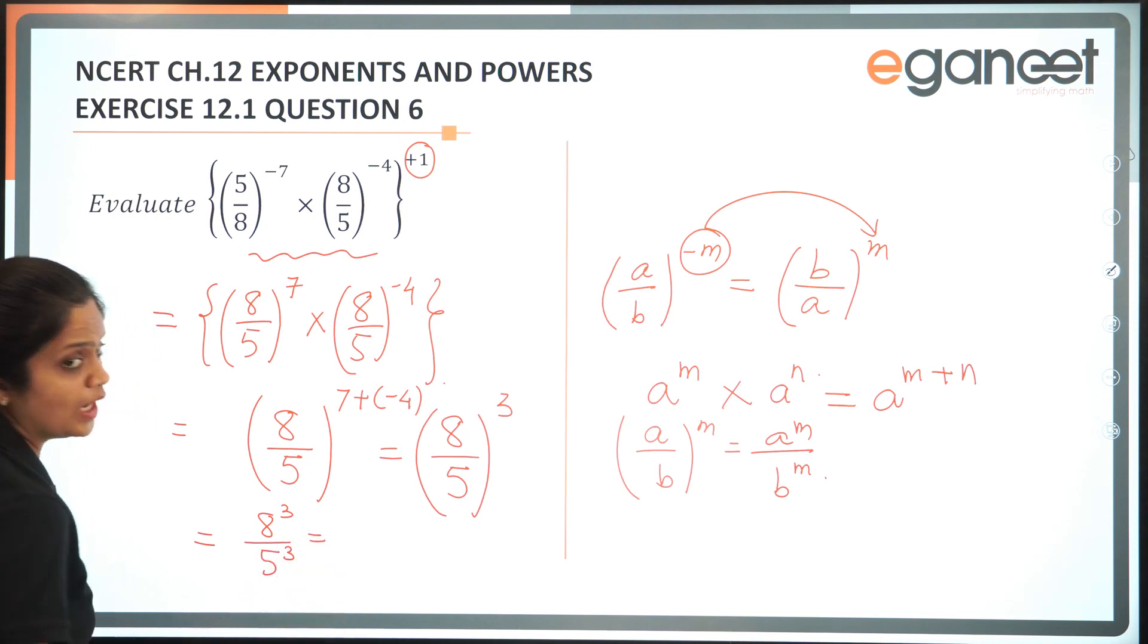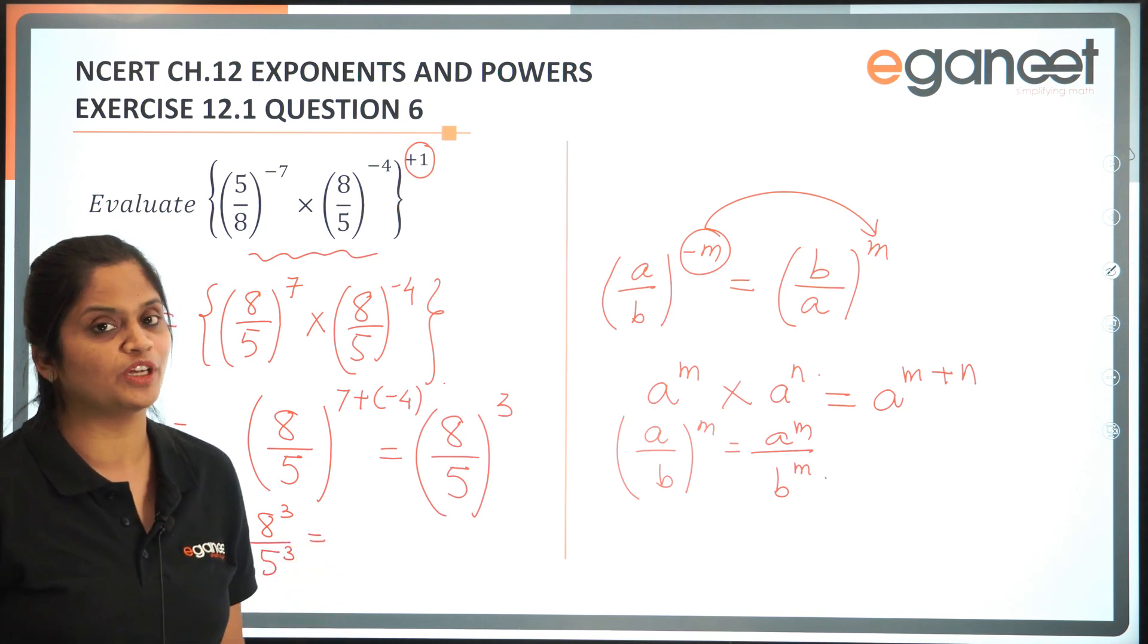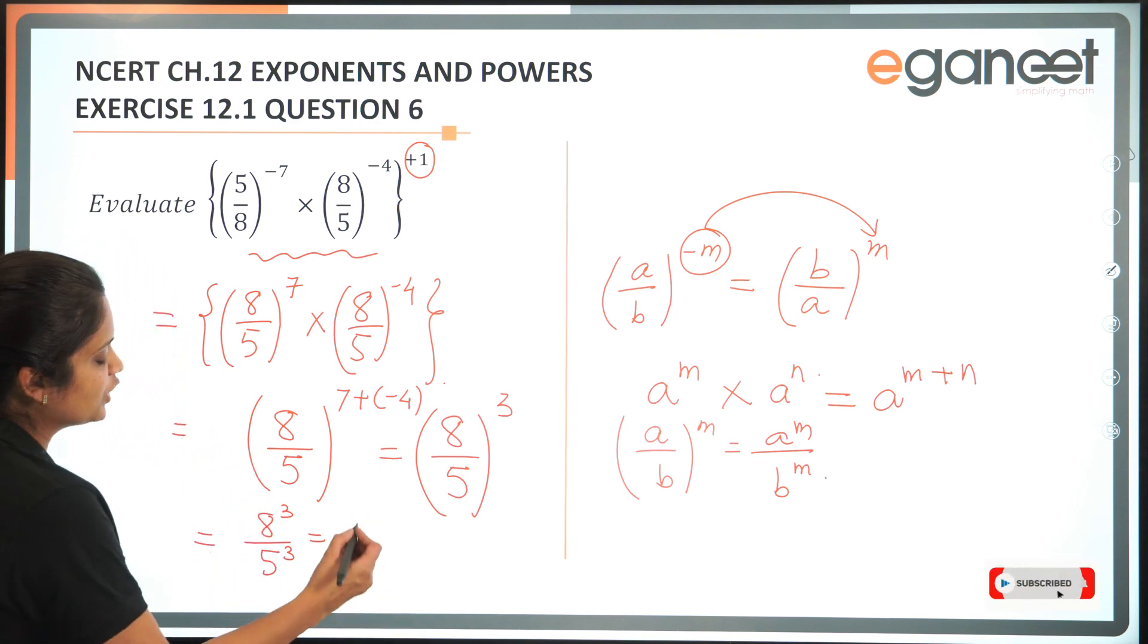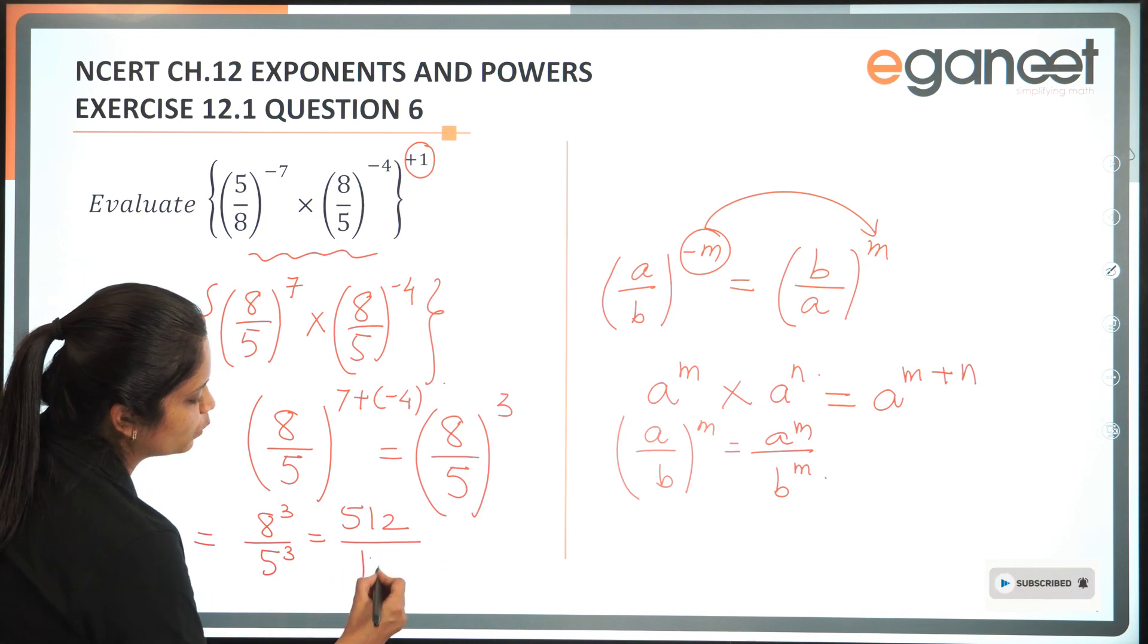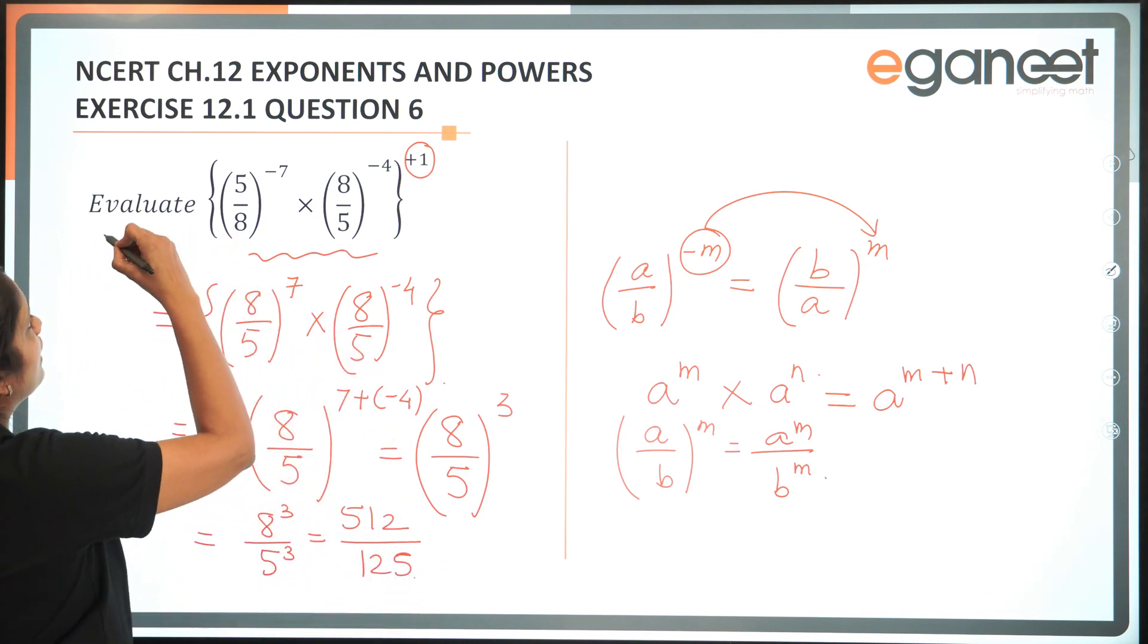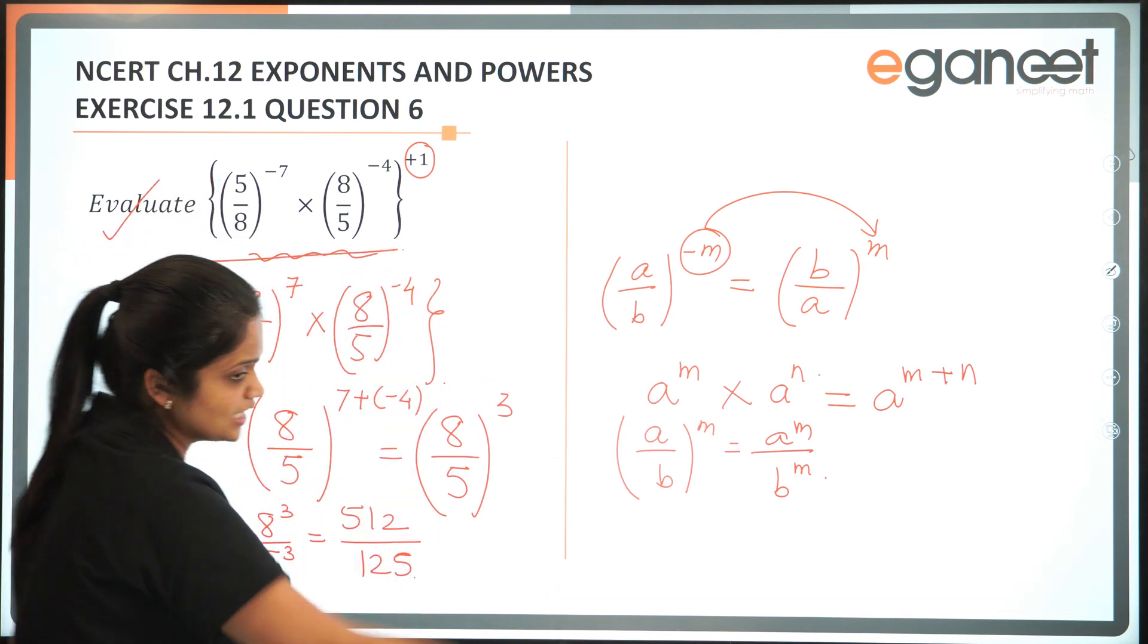Now I am sure you have learnt your cubes when you did the chapter cubes and cube root. And 8 cube is 512 and 5 cube is 125. And hence we have evaluated the given expression.